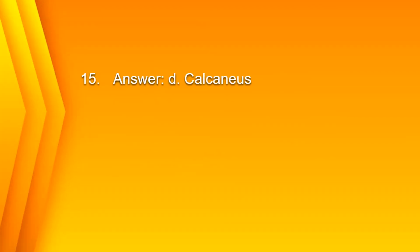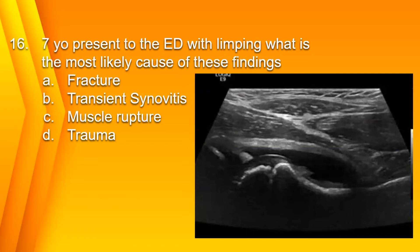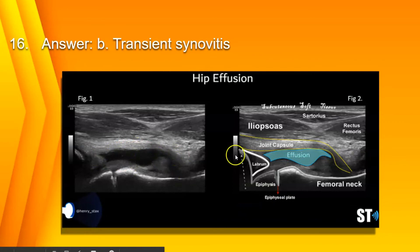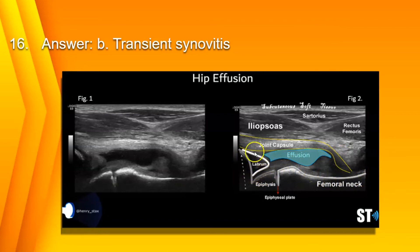Number 16: A 7-year-old presents to the emergency department with limping. What is the most likely cause of these findings? A. Fracture, B. Transient synovitis, C. Muscle rupture, or D. Trauma? The answer is B. Transient synovitis. Here you have a hip effusion caused by the synovitis. There's your joint capsule, femoral neck, femoral head, acetabulum, labrum, and the effusion is there.